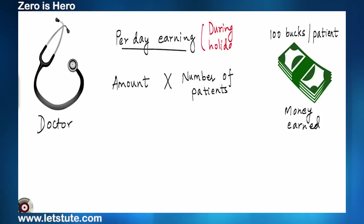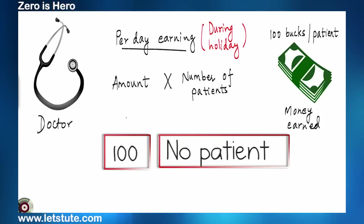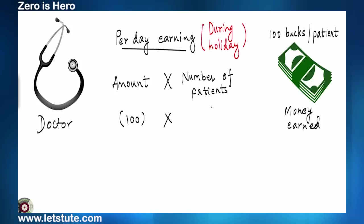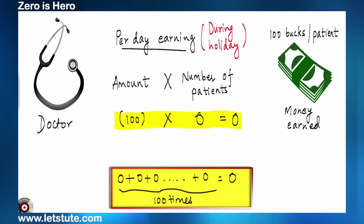But what about during a holiday? Your charges still remain hundred but since there were no patients, so the total money earned for that day would be zero multiplied by hundred that is zero. This also means that you add hundred zero times or you add zero hundred times which will again result in zero itself.